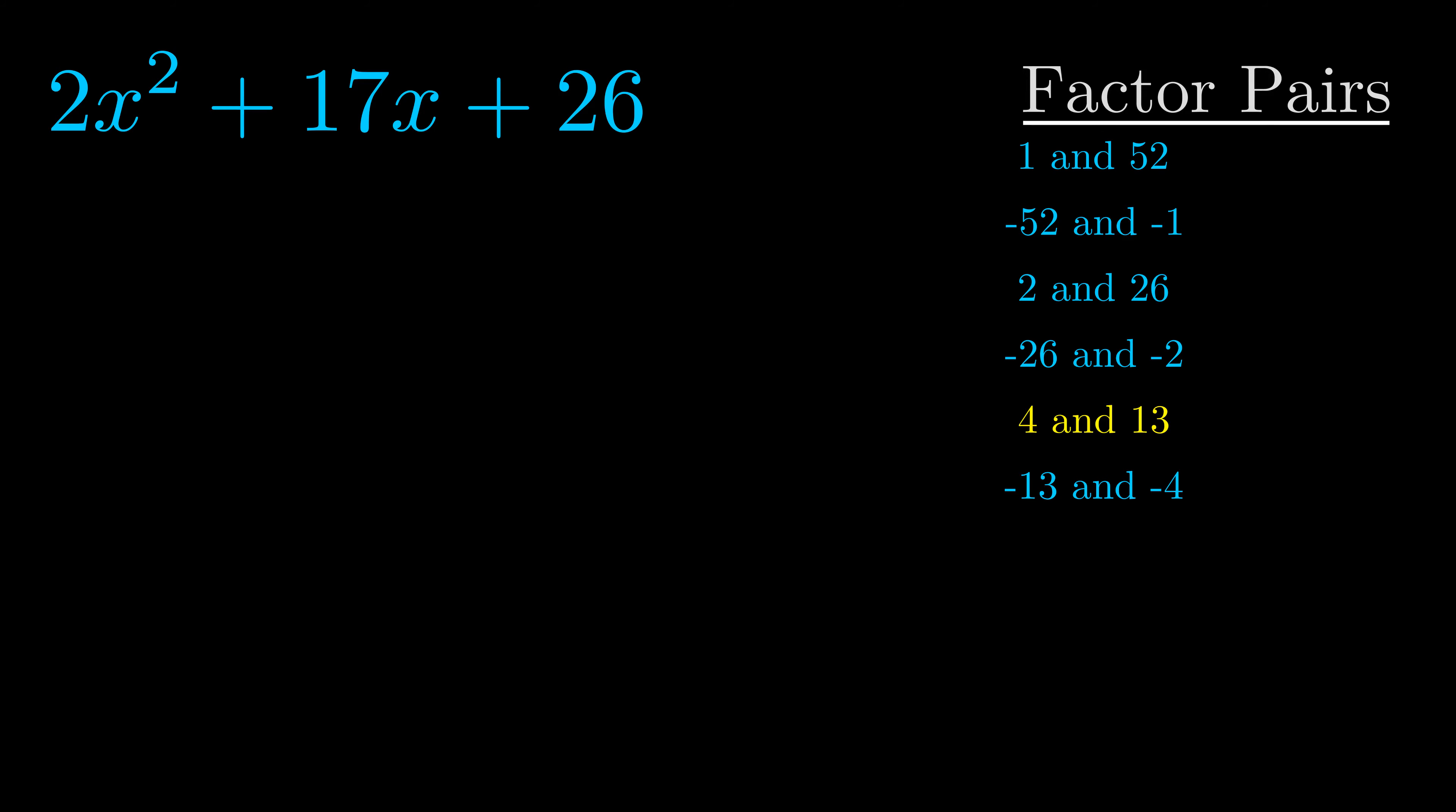And really this is the only factor pair that we need. Now once we have this factor pair what we want to do is we want to use it to split up the b value.